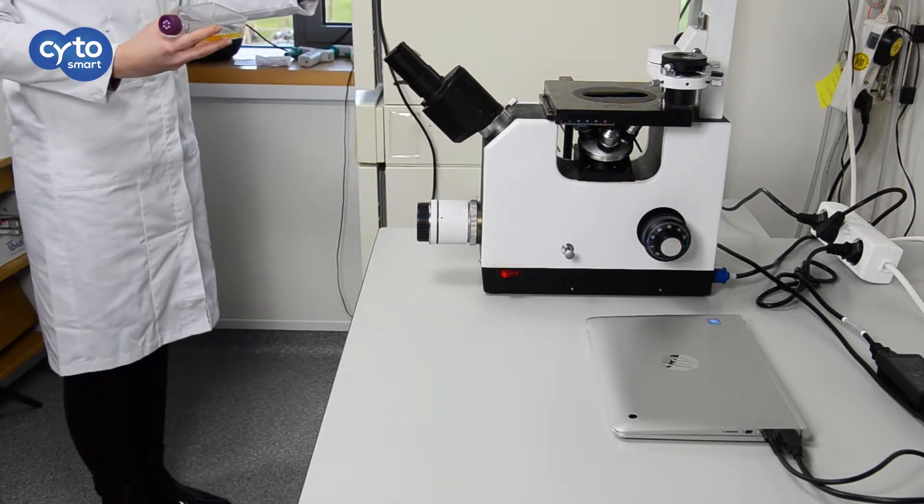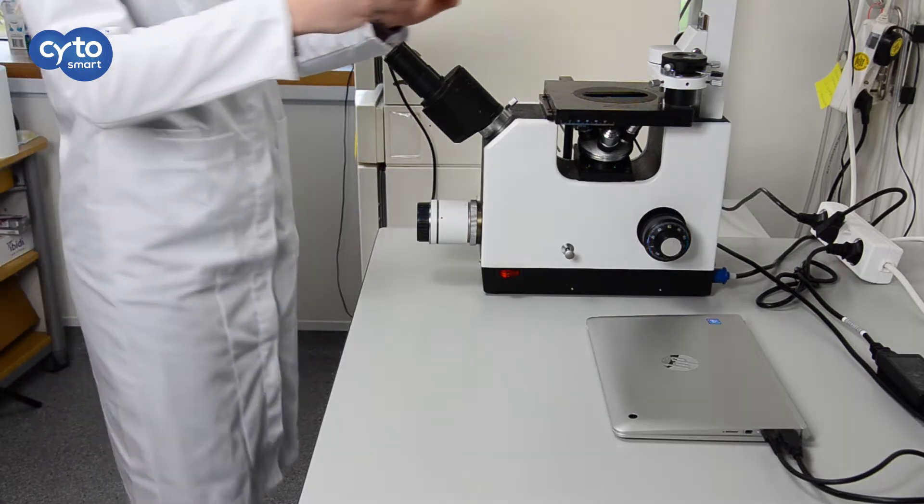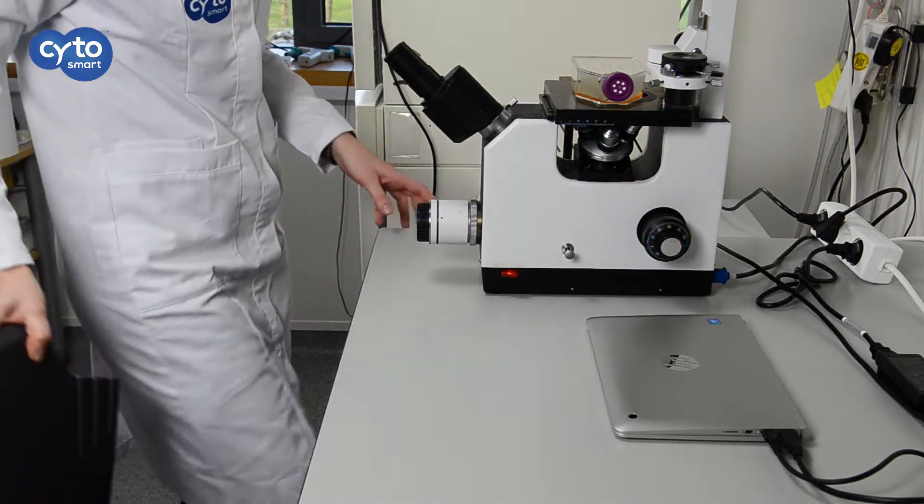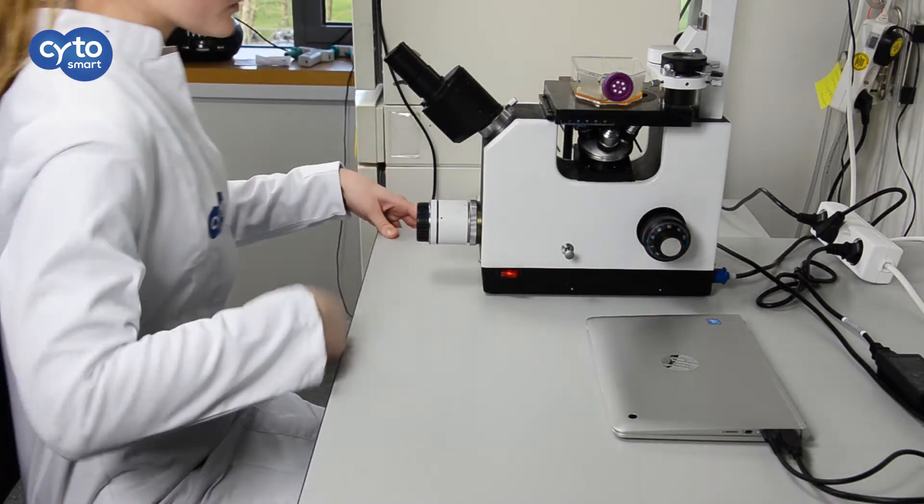The next step is to take the flask you wish to monitor out of the incubator. Place it on your microscope and inspect it for any contamination or other issues that may affect your research, just as you normally would.